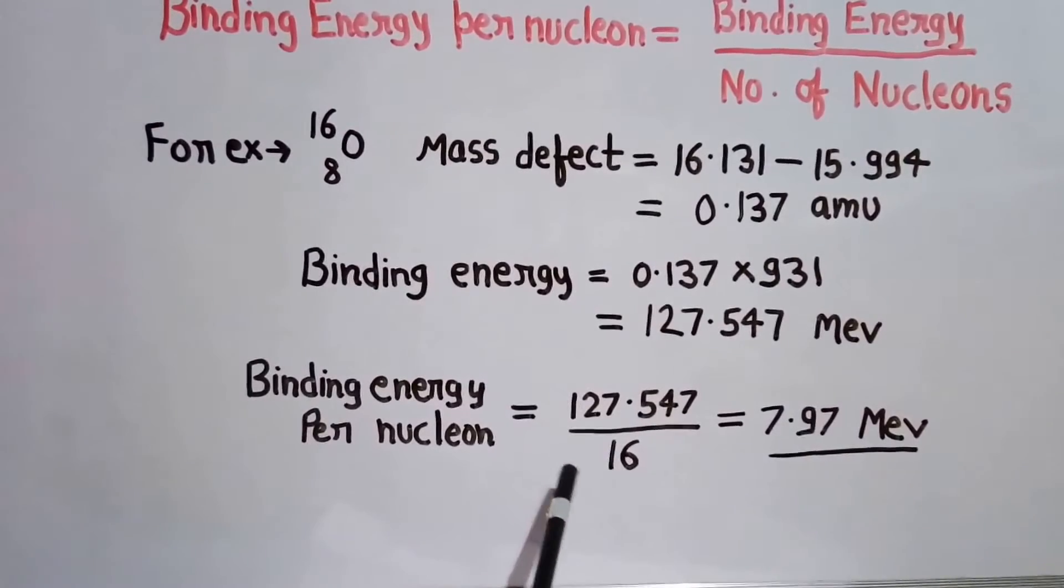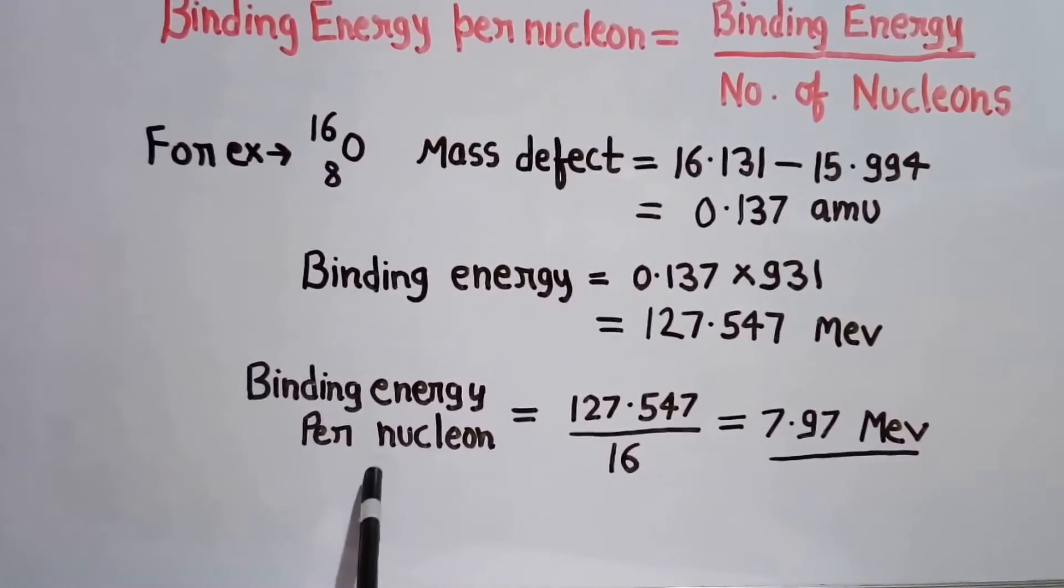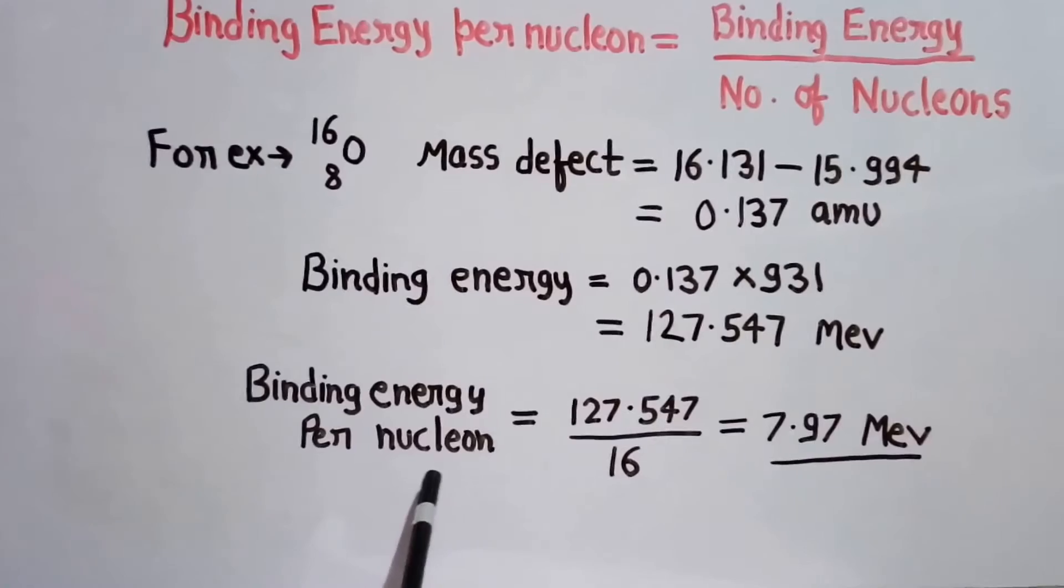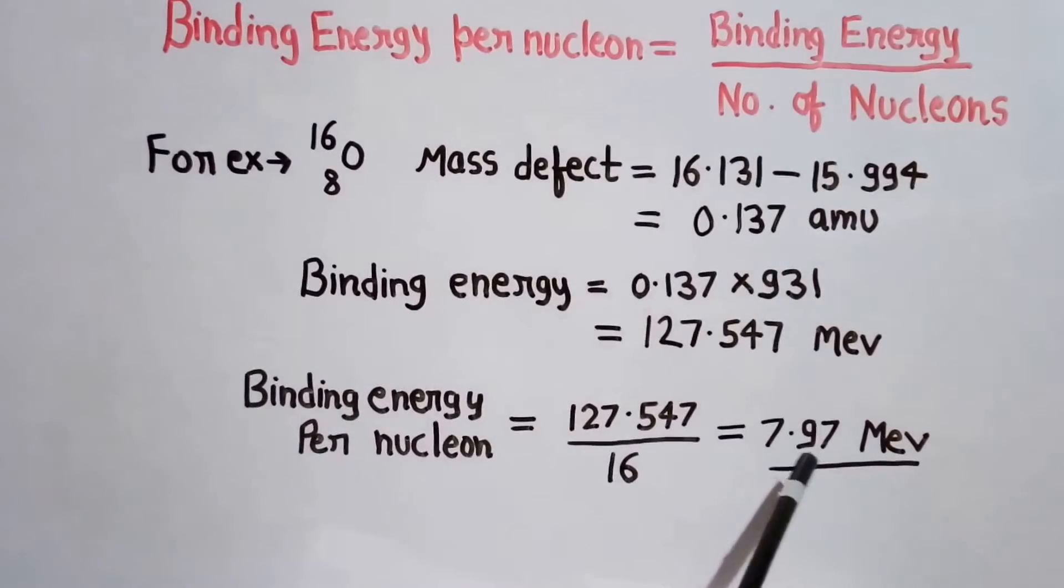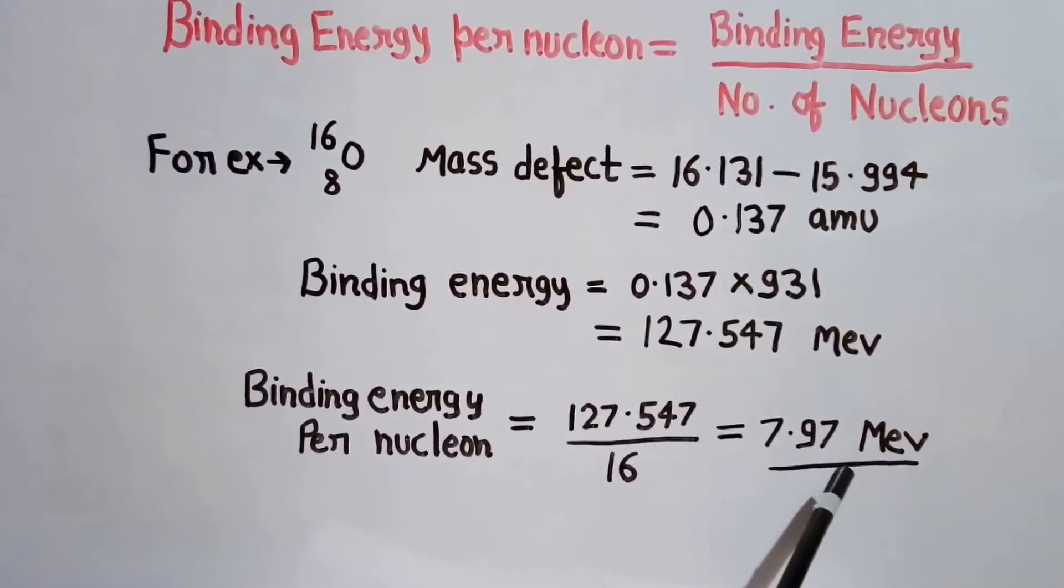Here, the number of nucleons is 16, and hence the binding energy per nucleon will be divided by 16 and will become 7.97 MeV.